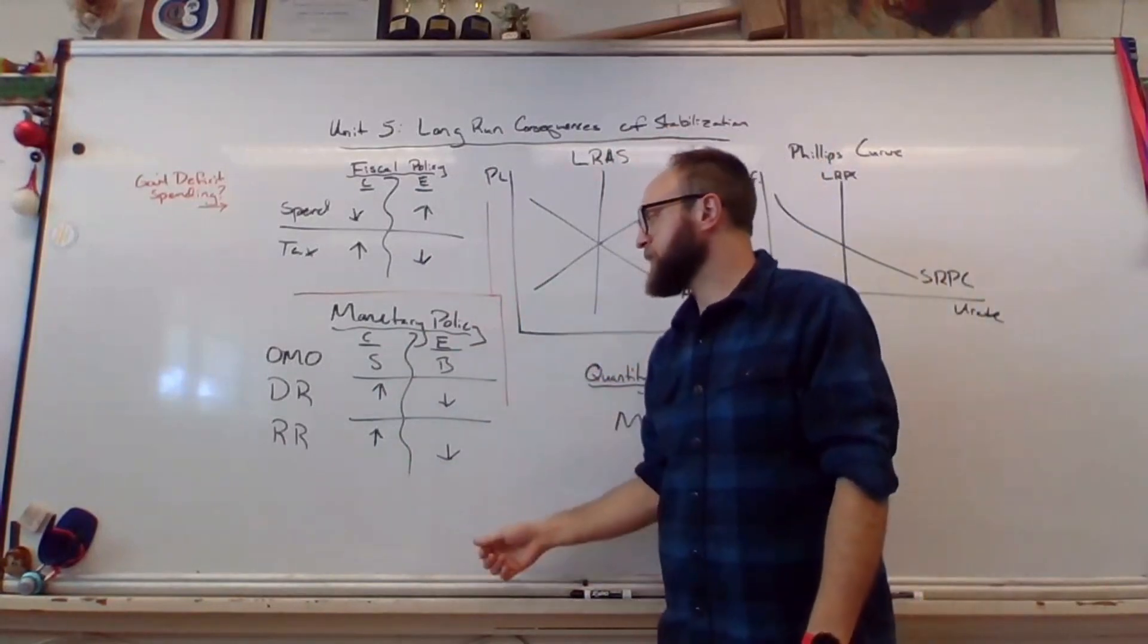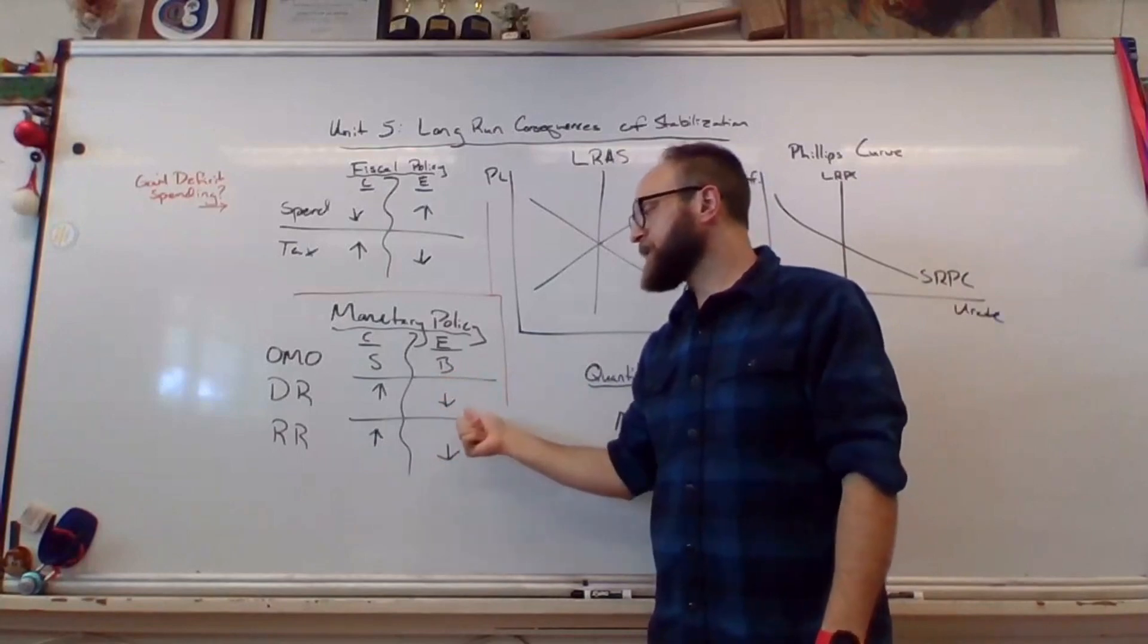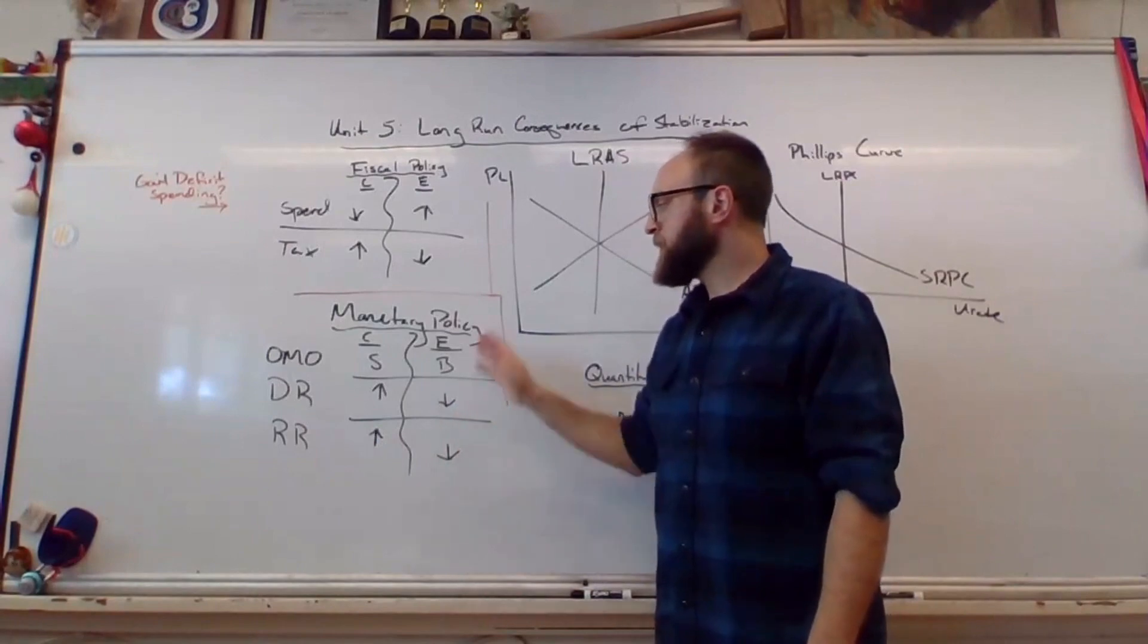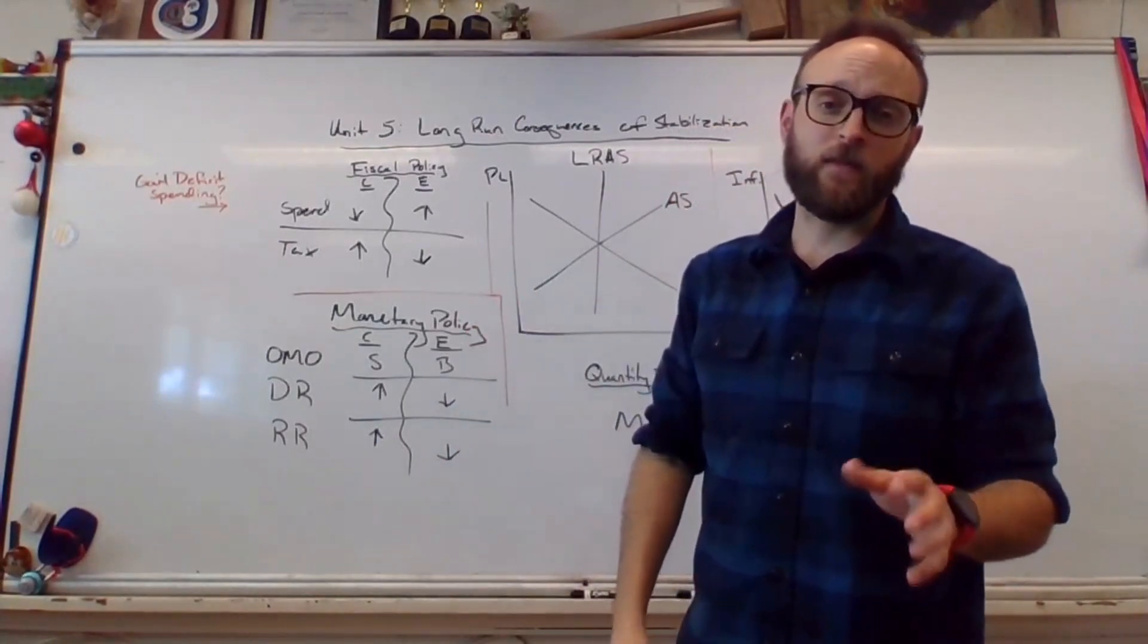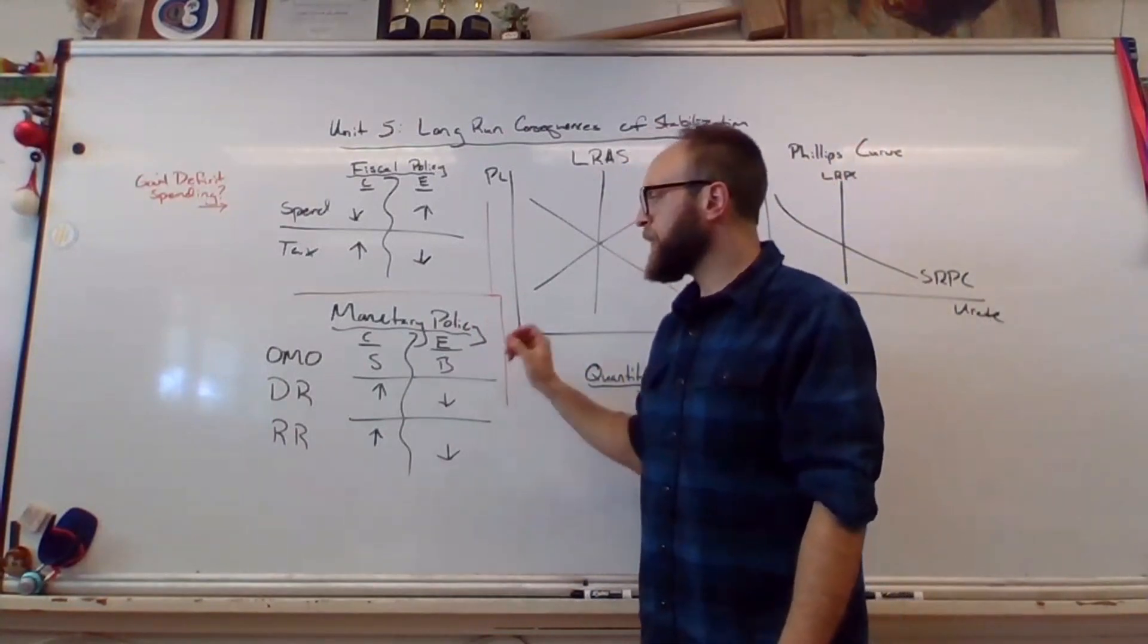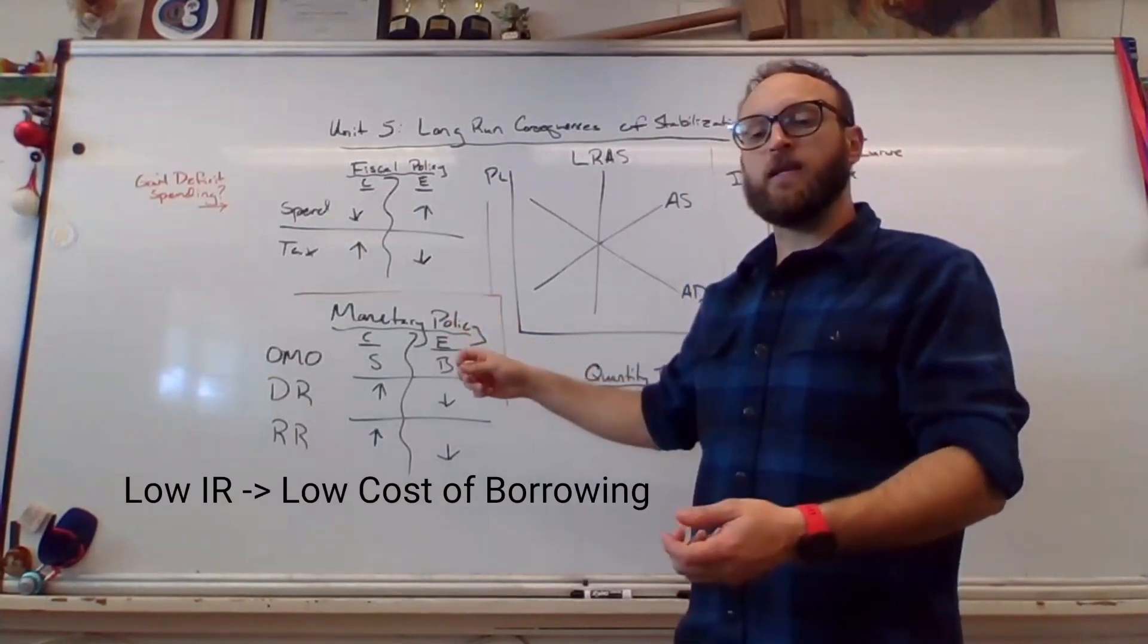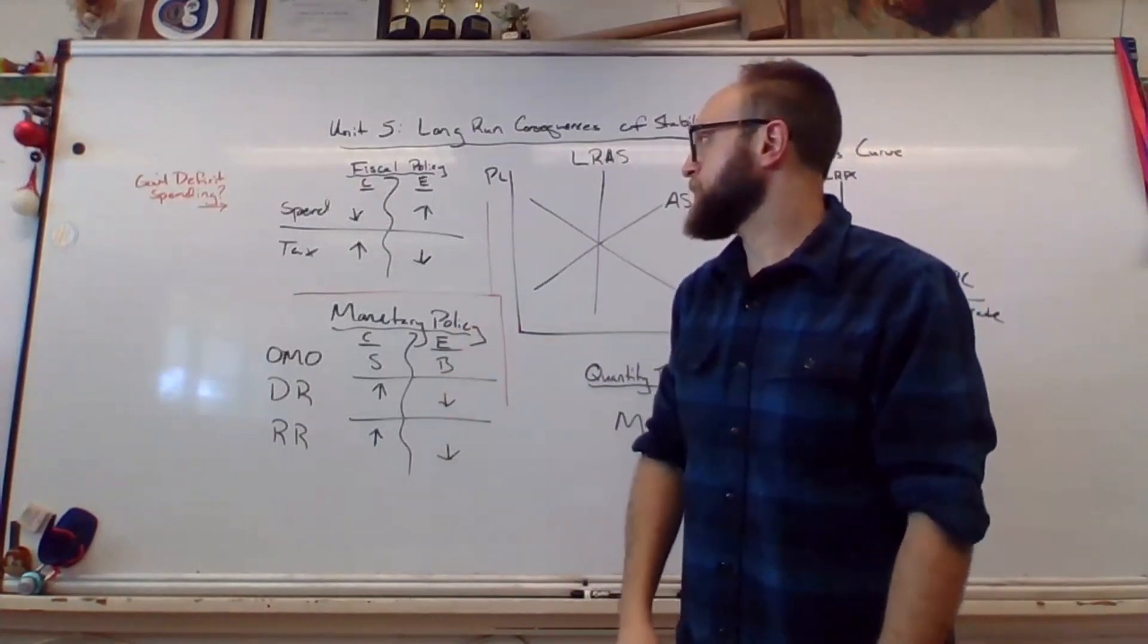Expansionary monetary policy would be buying bonds in open market operations, lowering the discount rate and thus the federal funds rate, and lowering the reserve requirement. To be totally honest, the goal here is lower nominal interest rates, shift the money supply line right on the money market graph, and these three things would accomplish that. By the way, by indirectly buying bonds, we are lowering the federal funds rate, so the Fed can manipulate the interest rates that banks charge each other through open market operations, which is pretty sweet.